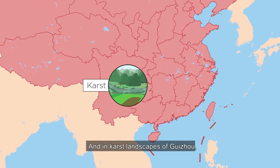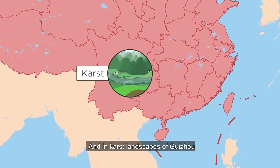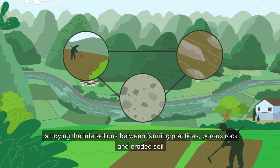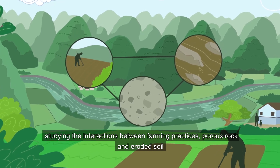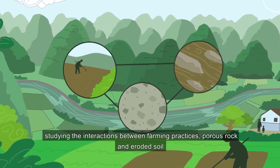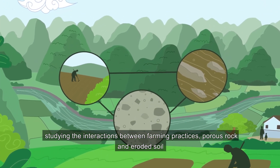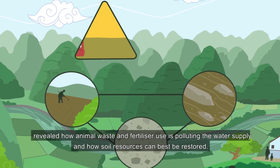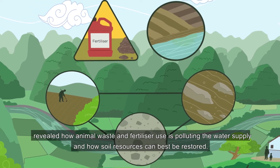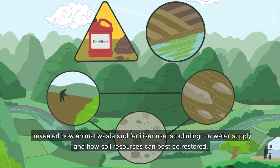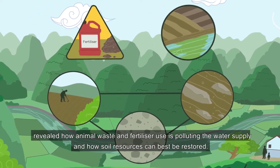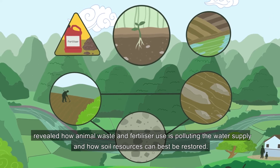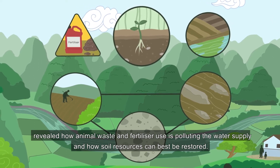And in karst landscapes of Guizhou, studying the interactions between farming practices, porous rock and eroded soil revealed how animal waste and fertiliser use is polluting the water supply, and how soil resources can best be restored.